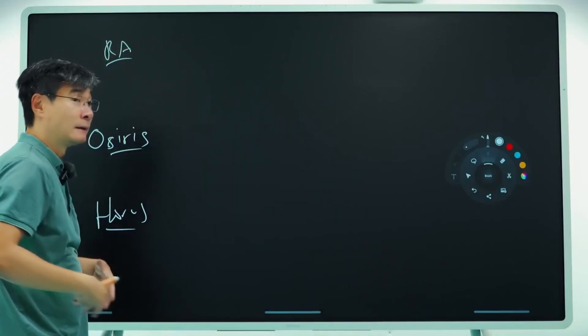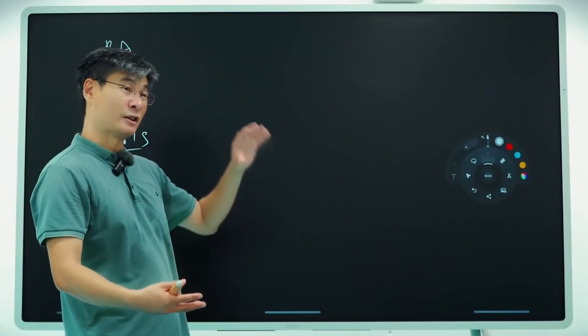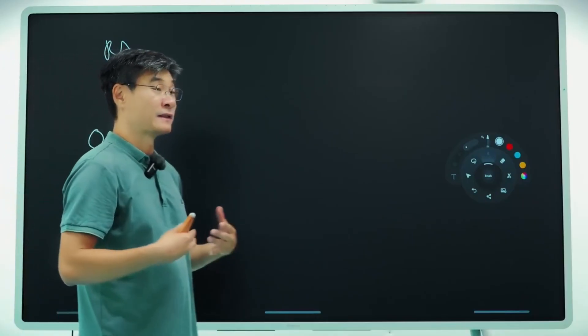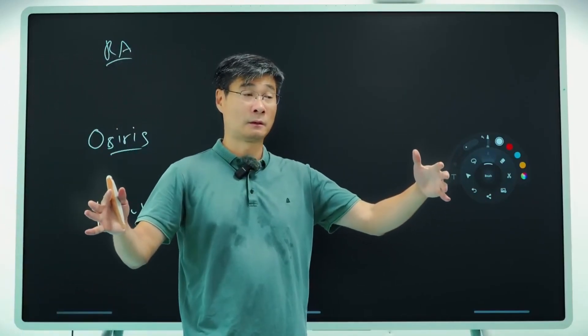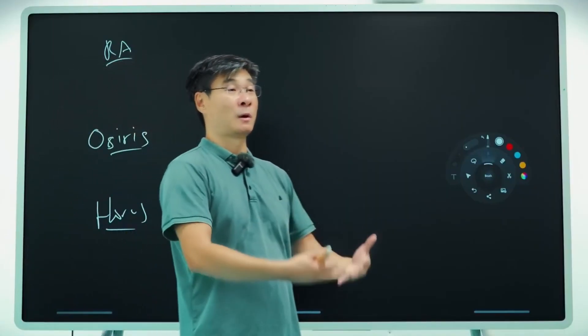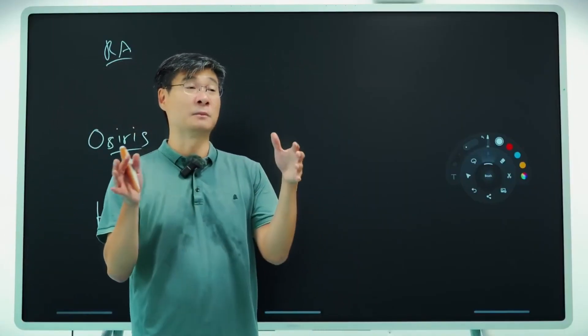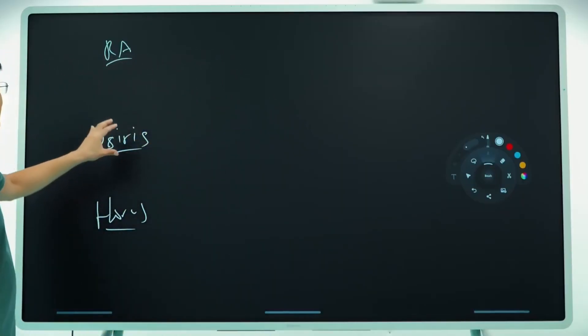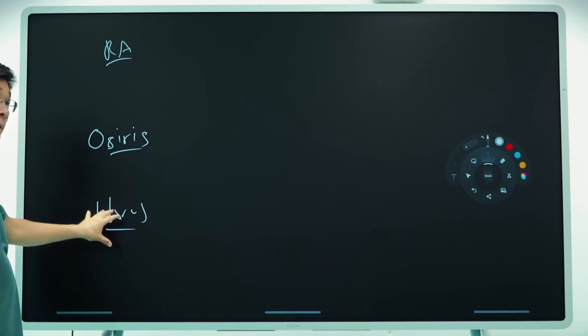These are the three main gods that Egyptians worship. Ra is what gave life to the universe. He's a sun god. Osiris is the god of civilization. He built Egypt. And then Horus is the god of kingship of empire. He's the one who brings stability to the throne.